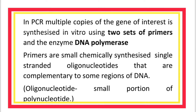In PCR, multiple copies of the gene of interest are synthesized in vitro using two sets of primers and the enzyme DNA polymerase. Primers are small chemically synthesized single-stranded oligonucleotides that are complementary to some regions of DNA. An oligonucleotide is a small portion of a polynucleotide.